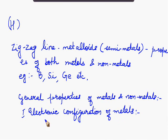Electronic configuration represents the arrangement of electrons in the atom of any element. Beginning with the electronic configuration of metals.